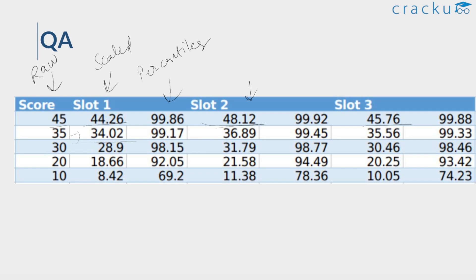A score of 35 in Slot 1 got scaled down slightly; in Slot 2 it scaled up to 36.89; and in Slot 3 it was more or less the same at 35.56. Even at lower ranges, the scaling is not too high or too low. For a score of 10, the scaled score was 8.42 in Slot 1, 11.38 in Slot 2, and close to 10 in Slot 3. These are the respective percentiles.